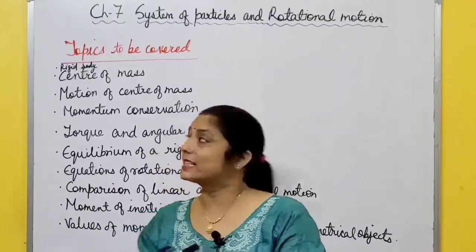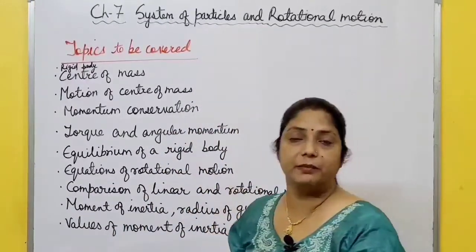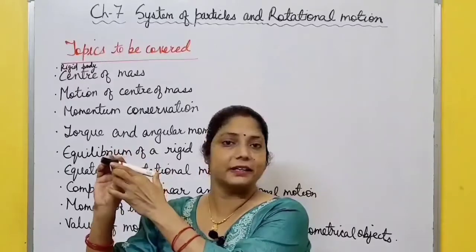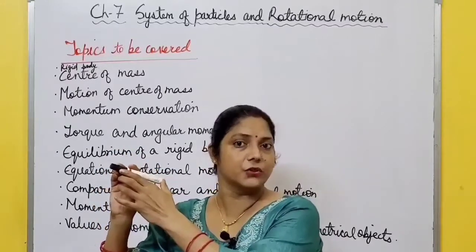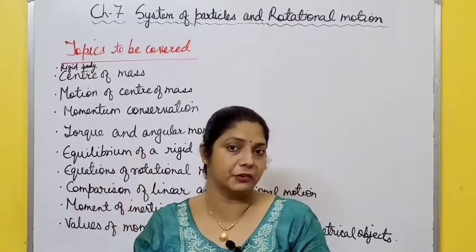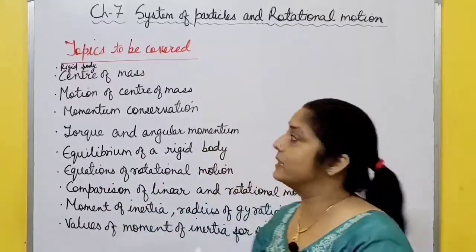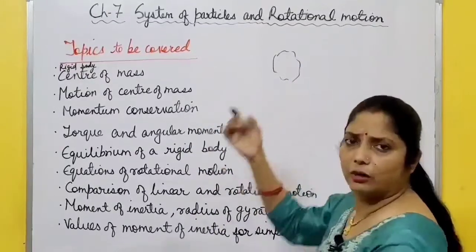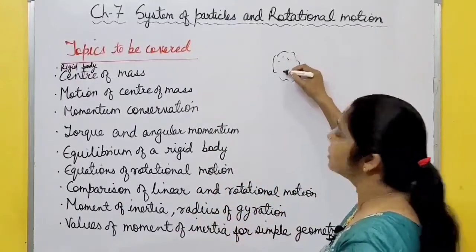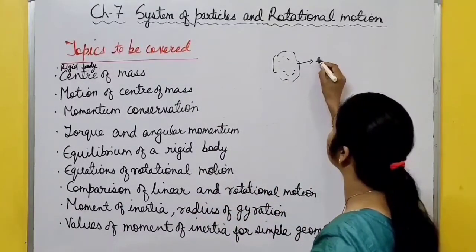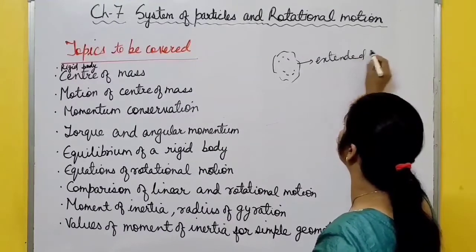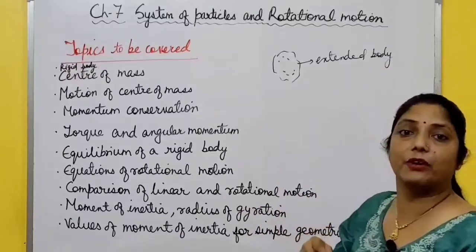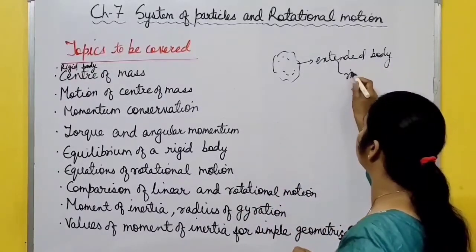In this chapter we discuss about system of particles. In the previous chapter we assumed this marker as a particle, but in reality it consists of a large number of particles - that is called a system of particles. This is any body - a ball or anything - it consists of large number of particles, and this system of particles is called an extended body. In this chapter we discuss the extended body as a rigid body.